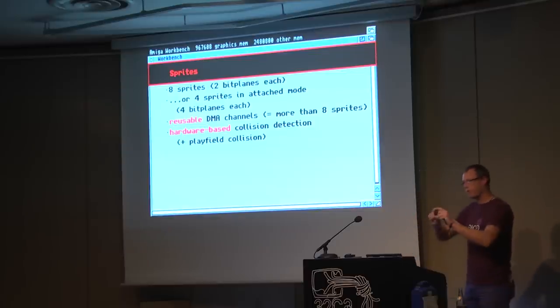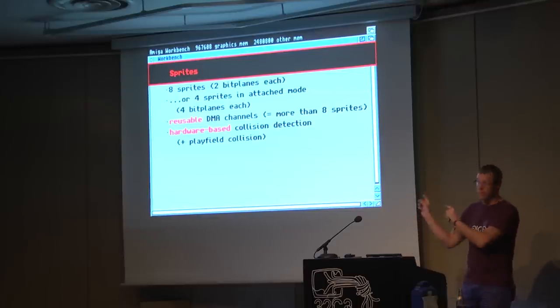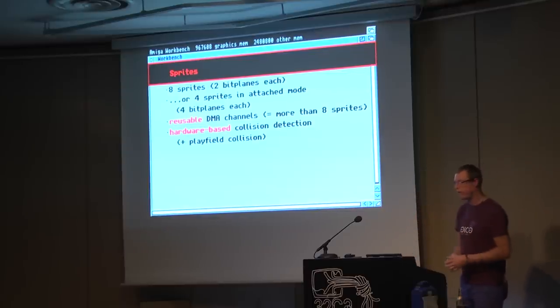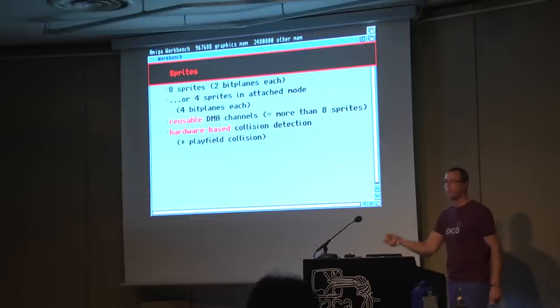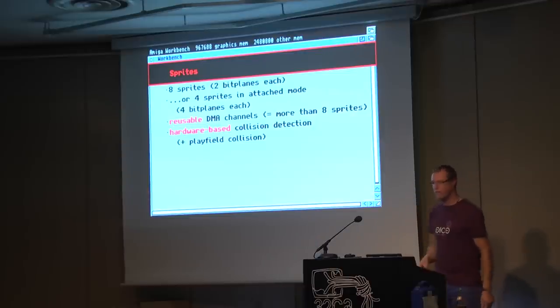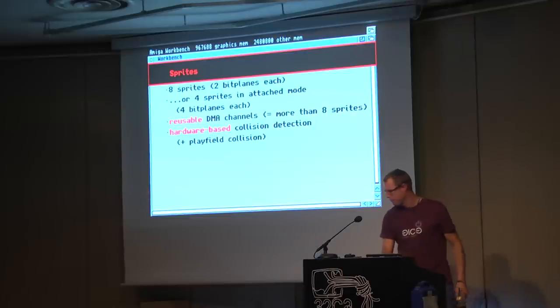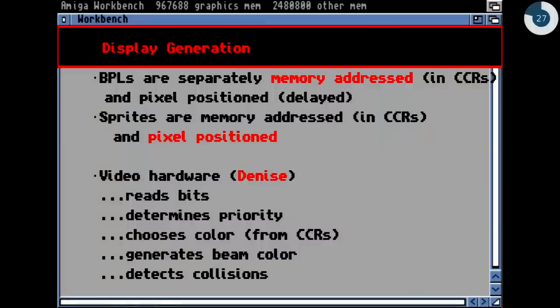It had hardware-based collision detection. Collision detection is important when you have several sprites — think of a game where something is moving and if they collide, something explodes or you gain health points. The collision of two sprites was done by hardware during screen buildup — comparing each bit to each other. If collision was detected, there was a special function register you could query with the CPU to see if a collision occurred.